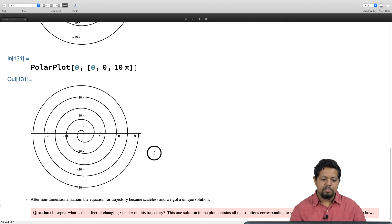What is the effect of u and omega on this plot? Give it a moment of thought, and I will explain it to you in a moment.